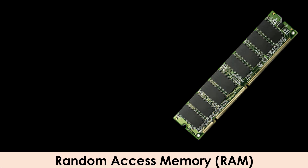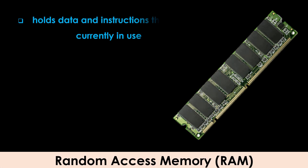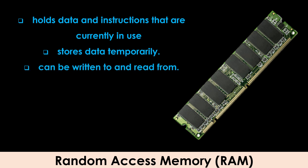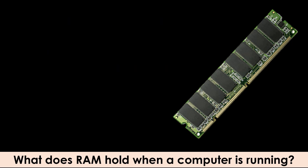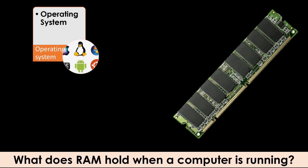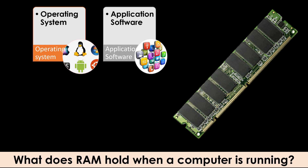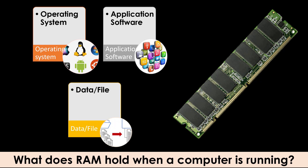Random access memory holds data and instructions that are currently in use. RAM stores data temporarily. This memory can be written to and read from, but the contents of RAM are lost when power is turned off, which is why it is known as volatile memory. In a modern PC, the RAM holds the operating system, application programs currently in use, and data of the file being worked on.